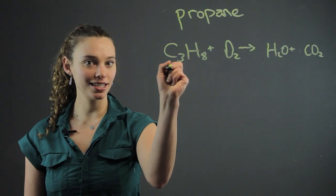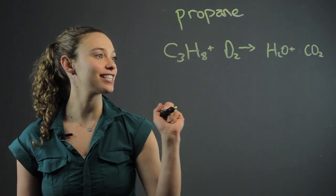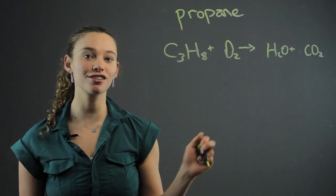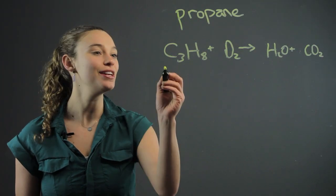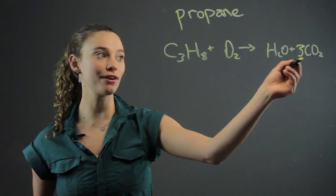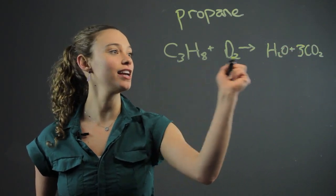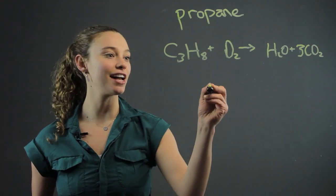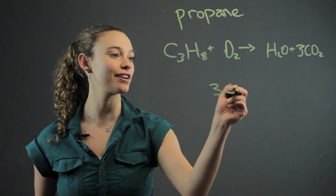We have three C's here, three carbons in the reactants and only one here. So we want to balance them out so they're equal. Let's add a 3 as a coefficient in front of the CO2. Now we have three carbons on both sides. Three C's here so you can keep track.